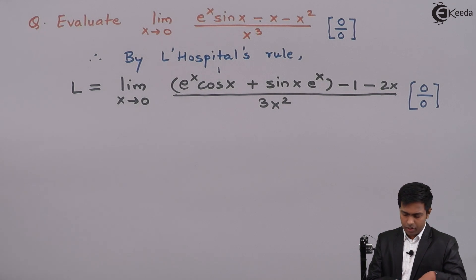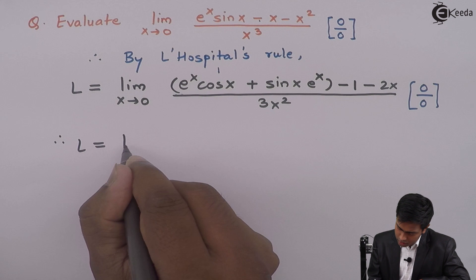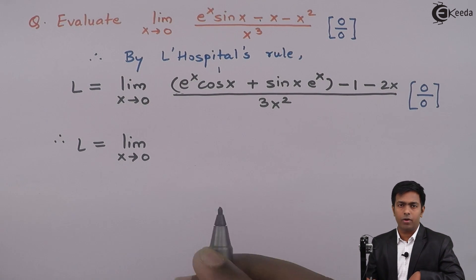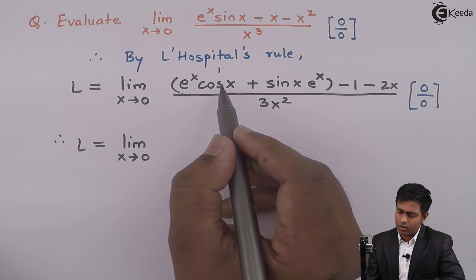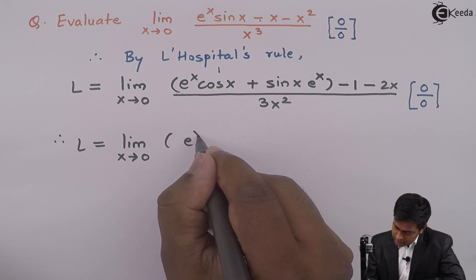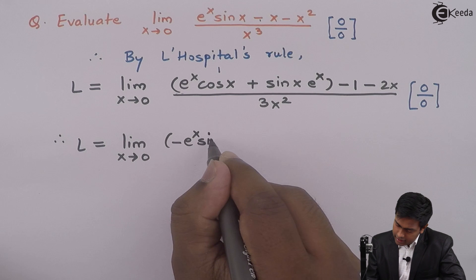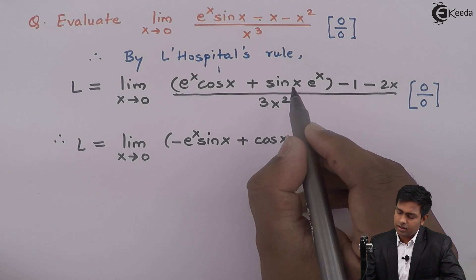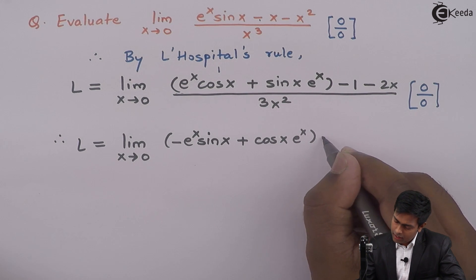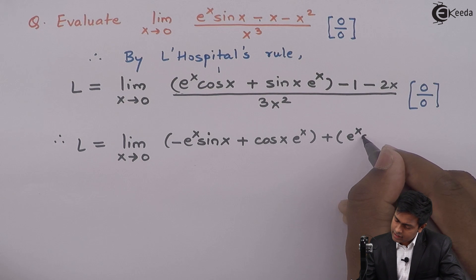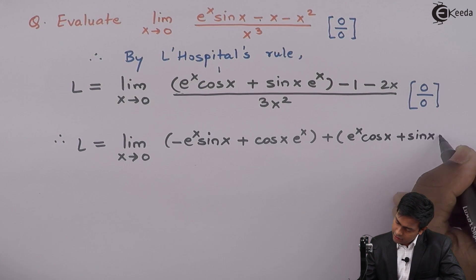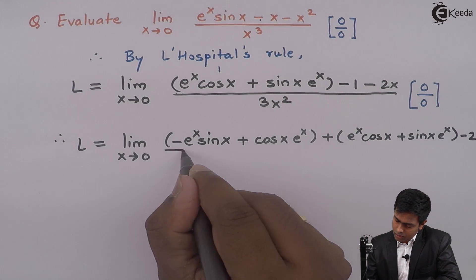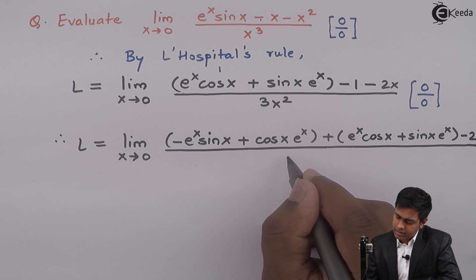We will again apply L'Hôpital's rule. So L equals limit x tends to 0. We find the derivative of the numerator and denominator again. For e raised to x · cos x, using the product rule: e raised to x · (minus sin x) plus cos x · e raised to x. For e raised to x · sin x, using the product rule: e raised to x · cos x plus sin x · e raised to x. Then derivative of minus 1 is 0, upon derivative of 6x is 6.